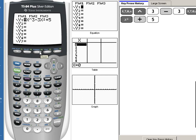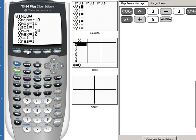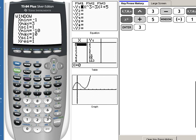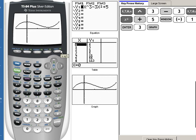And instead of just doing a nice zoom 6, I'm going to hit window this time. And I'm going to change my x's from negative 1 to 3. Remember, that was the indicated interval. And then we're going to hit graph. So this is what that will look like.